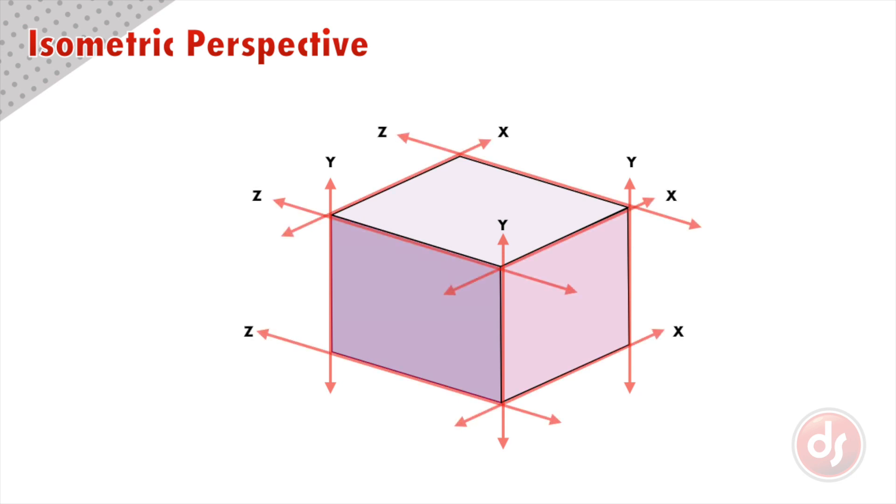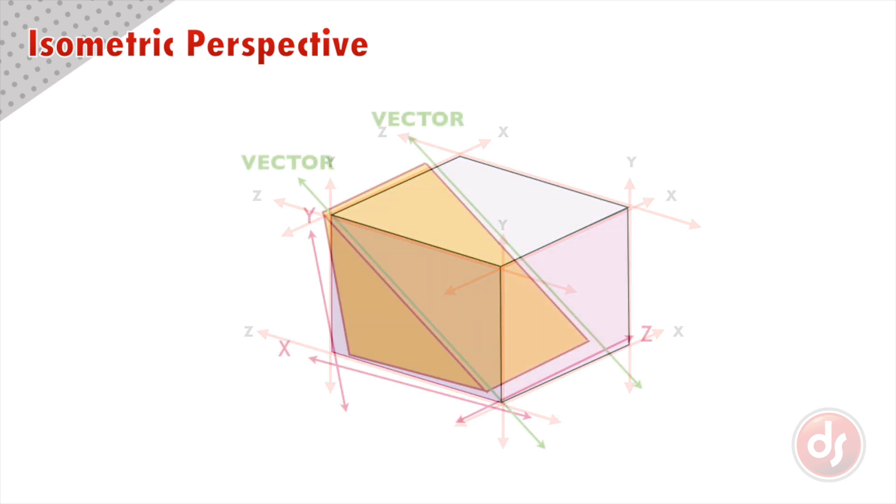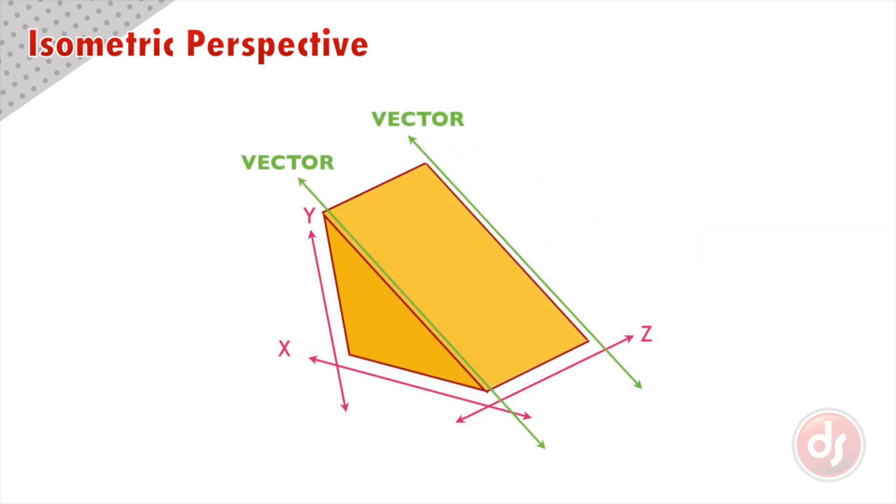Isometric perspective is not necessarily how our eyes see the world, but it gives the impression of a solid three-dimensional form. We start with isometric perspective because it is a simpler way to draw accurately, and it helps build our spatial awareness so we can create convincing three-dimensional forms. And as you might have guessed, when two vectors are moving in the same direction, they will also be parallel to each other.